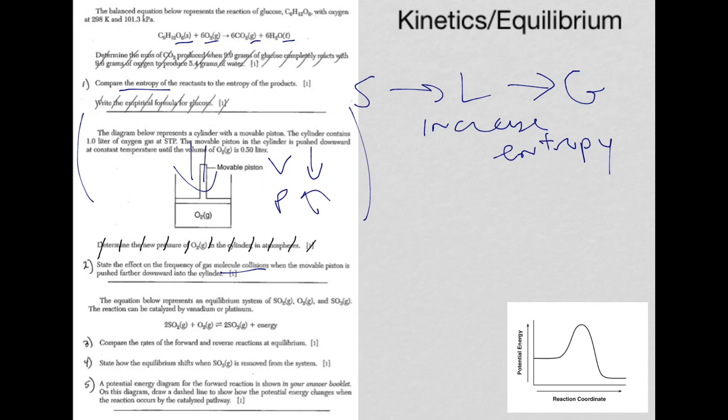For questions three, four, and five, we have the information here. Let's take a look. Question three: compare the rates of the forward and reverse reactions at equilibrium.